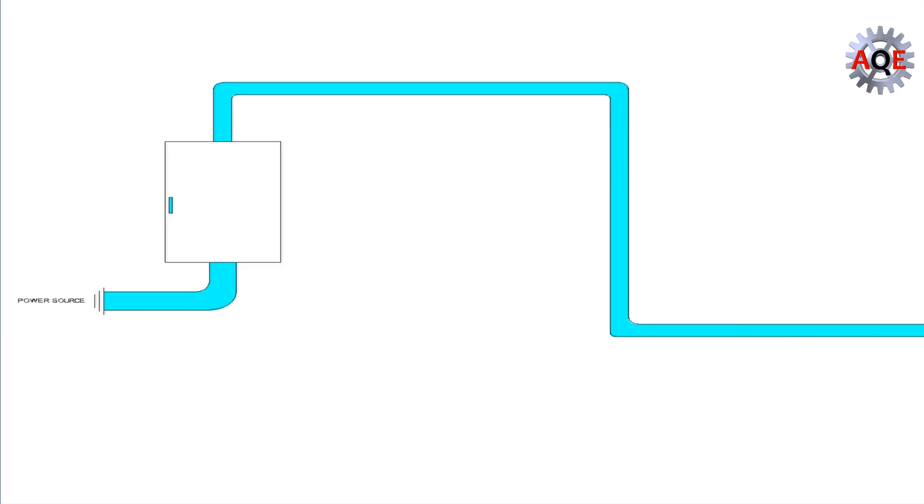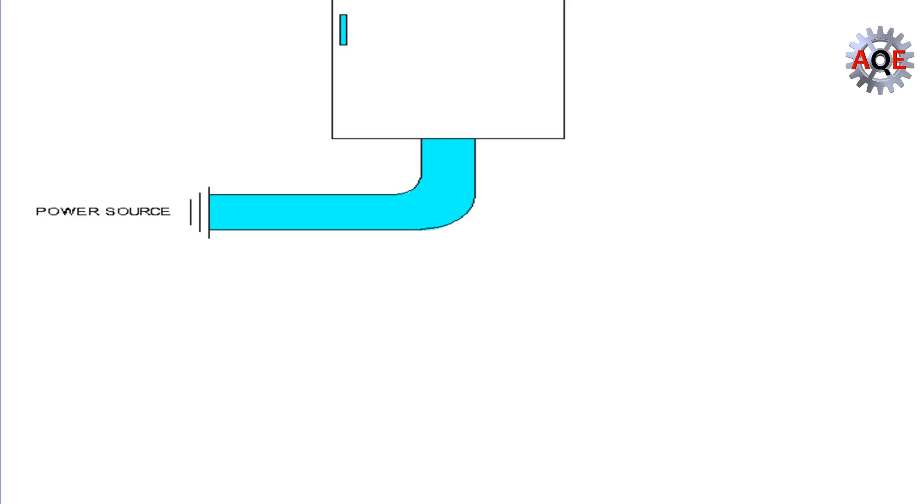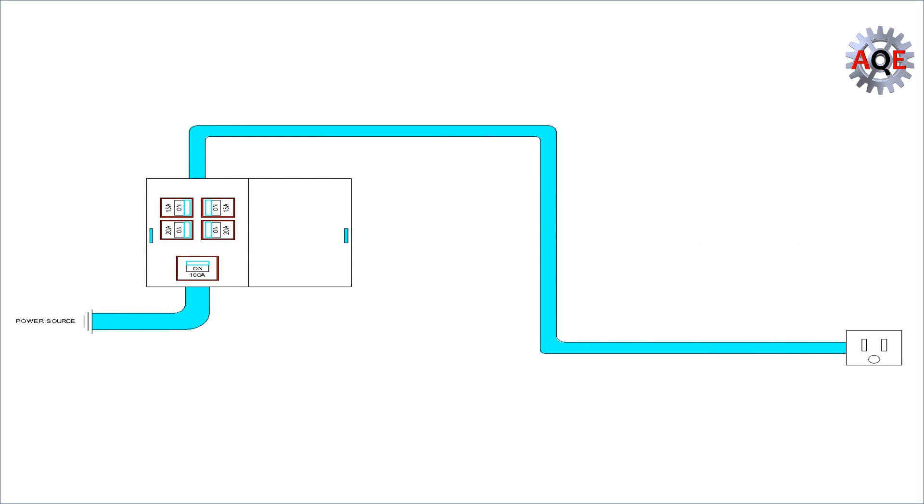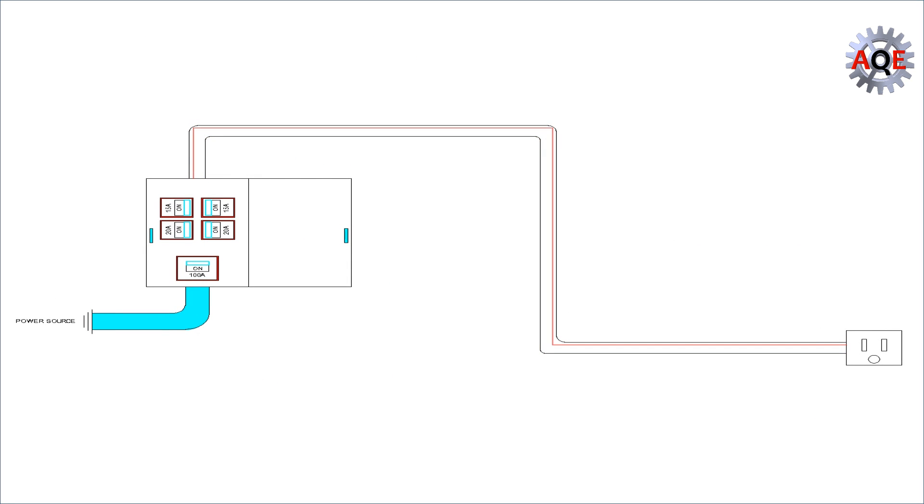Every circuit needs a power source. In order to give power supply to an outlet or a light bulb in your home, we need a connection that supplies power from our source to our outlet or bulb. This connection is called hot wire.